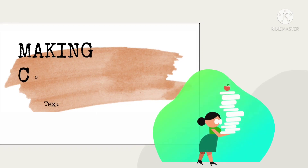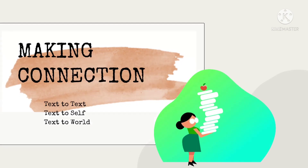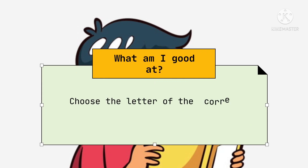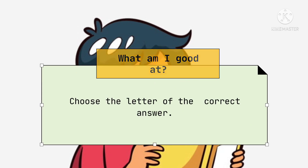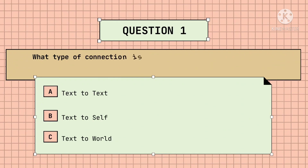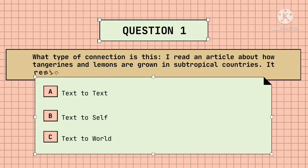For today's lesson, we will learn the three types of making connection to text. But before we begin, let's find out what you already knew in our lesson. What type of connection is this? Is it text-to-text, text-to-self, or text-to-world? Pause the video before I reveal the answer.